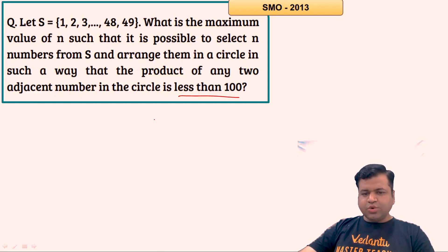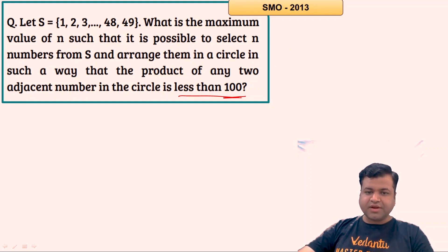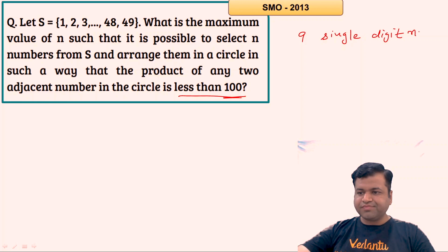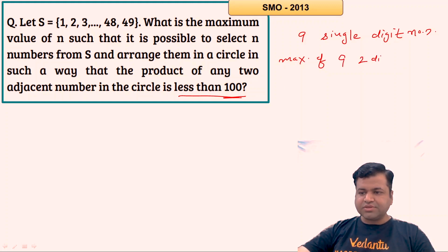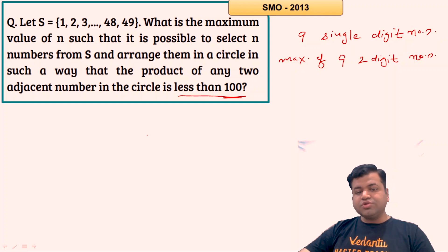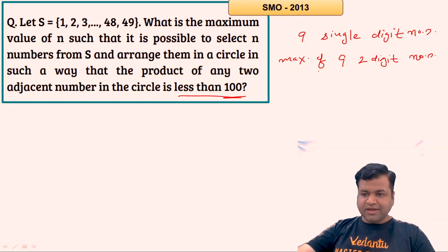Let's take any two two-digit numbers — the product of any two two-digit numbers will definitely be greater than 100. And there are only nine single-digit numbers, that is 1 through 9. So that means we can take a maximum of nine two-digit numbers. If we take more than nine two-digit numbers, then when we arrange these numbers in a circle, definitely two of them will be consecutive, and hence the product of those two adjacent numbers will definitely be greater than 100. So we can take a maximum of nine two-digit numbers because there are only nine single-digit numbers available.